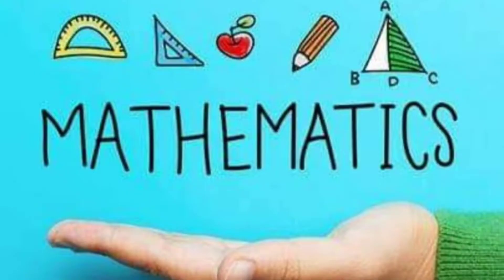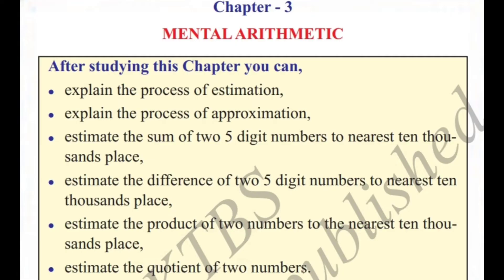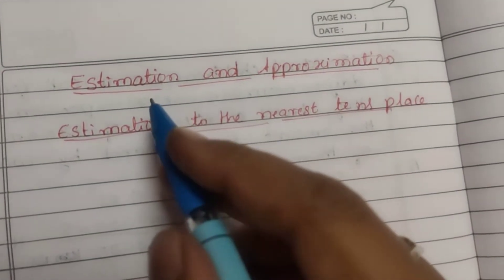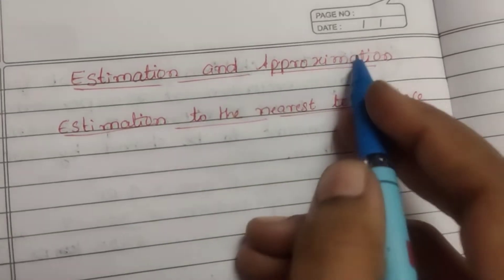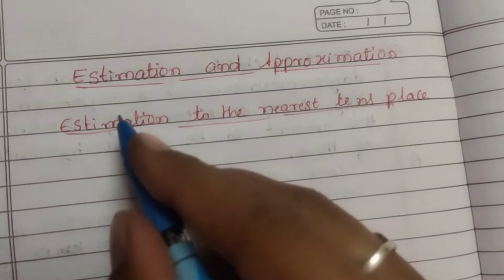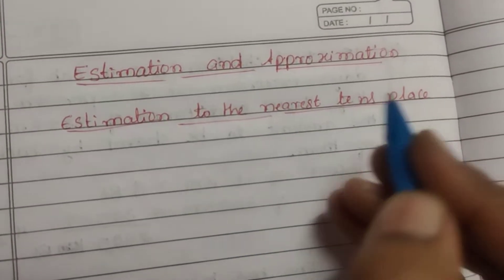Hello everyone, welcome to Maths Class 5th Standard Part 2. Let's see the new lesson: Chapter 3, Mental Arithmetic. This lesson is called Estimation and Approximation. Estimation to the nearest tens place.